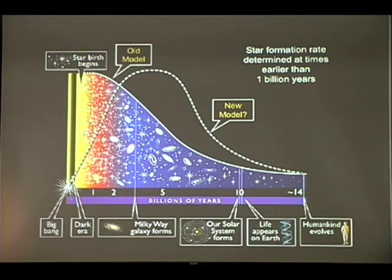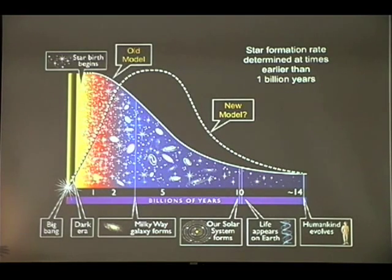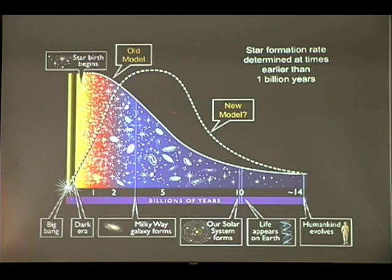With Hubble, we looked at when the universe was less than one billion years old, and we discovered that the universe was already forming new stars at a higher rate than it is doing today. So once the universe started forming stars, it started to do that furiously. It reached a peak some seven or so billion years ago, and since then the rate of star formation in the universe has been declining.